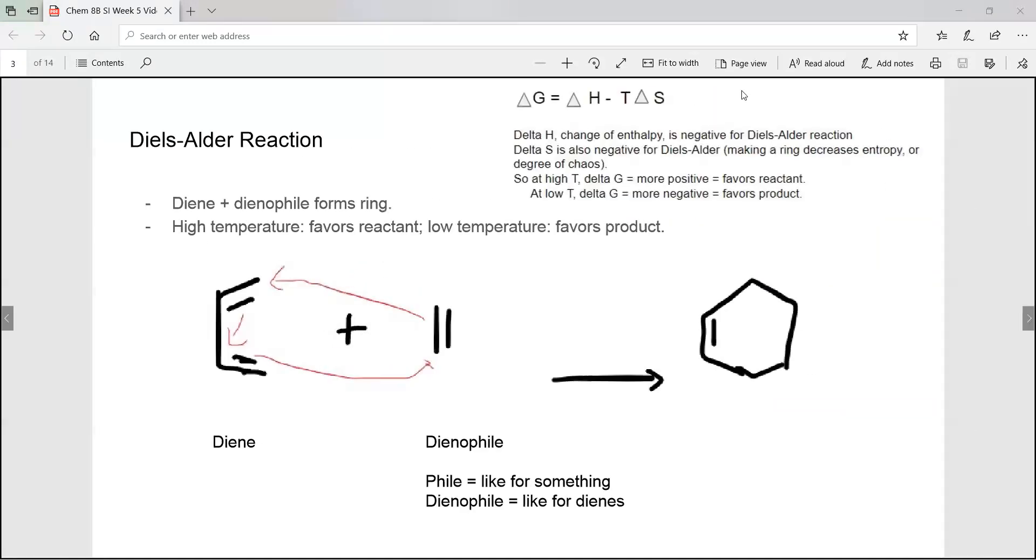In the Diels-Alder reaction, diene and dienophile come together to form a ring. At higher temperature, reactants favor and at lower temperature, the products favor. This is because at higher temperature, delta G becomes more positive, favoring the reactant. At lower temperature, delta G becomes more negative, favoring the product.